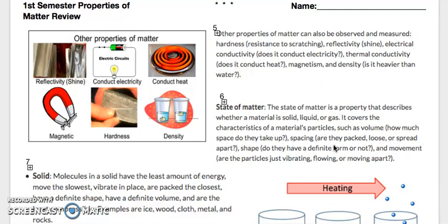Other properties of matter can also be observed and measured. Hardness is the resistance to scratching. Reflectivity is shine. Electrical conductivity, does it conduct electricity? Thermal conductivity, does it conduct heat? Magnetism and density, is it heavier than water? If you look right here, this is a nice visual.